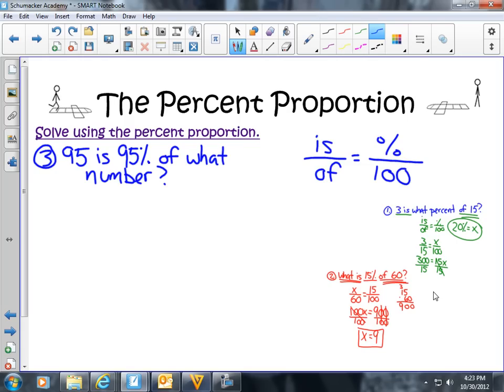In this problem, we're going to start off by putting in our proportion. I'm going to put a blank one here. The 100 goes down first because it's the constant. Do I have a percent in here? I do. It's 95 percent, so I'm going to put the 95 over here. And I have 95 is. The is, as you can see, is on the top left-hand side of the proportion, so I'm going to put a 95 here. And of what? Well, I don't know, so I'm going to put an x right here.